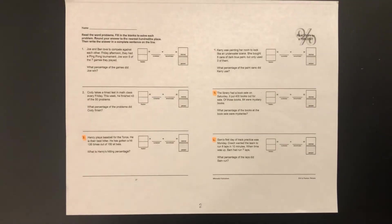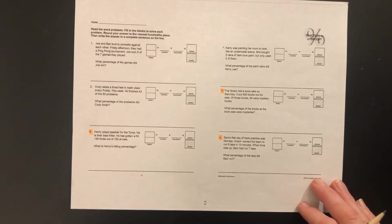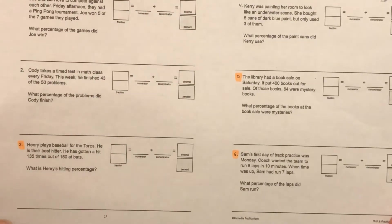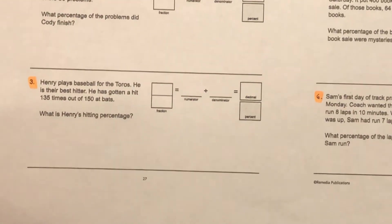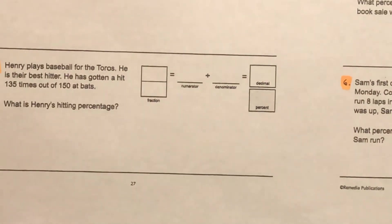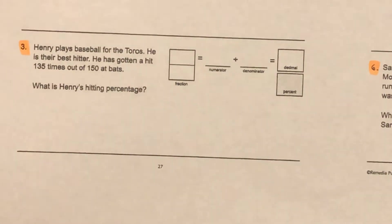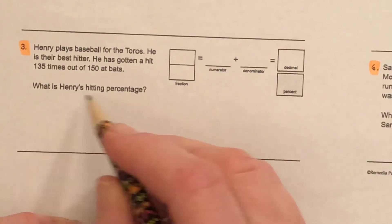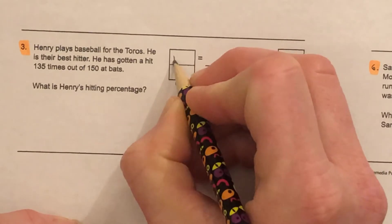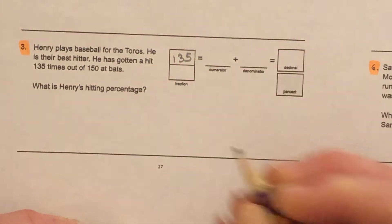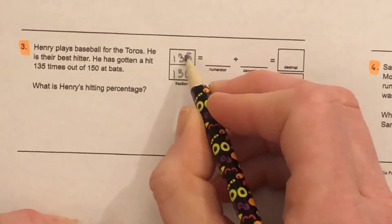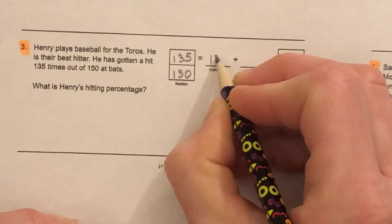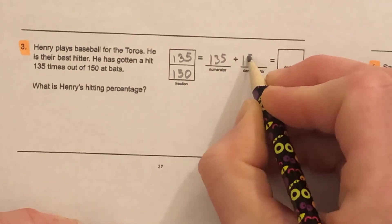On the second page we'll do three of them together. Let's start with number three. Henry plays baseball for the Toros. He's their best hitter. He has gotten a hit 135 times out of 150 at bats. What is Henry's hitting percentage? 135 times out of 150. This is a fraction and it's division: 135 divided by 150.